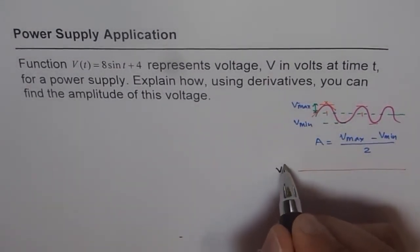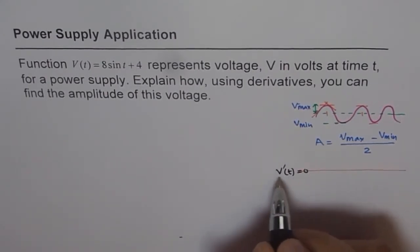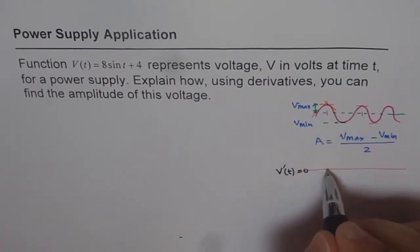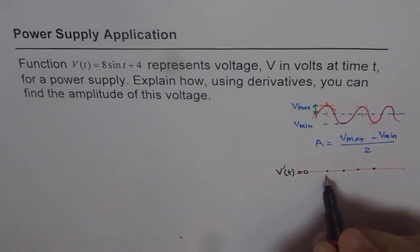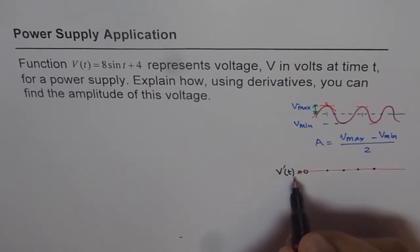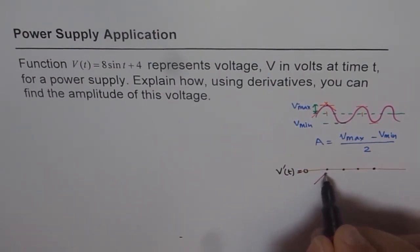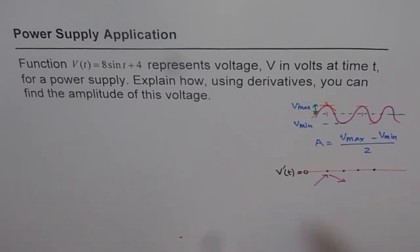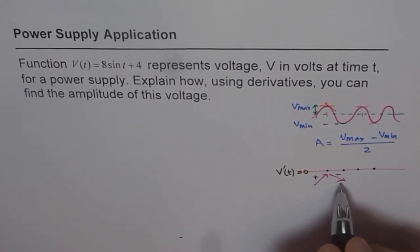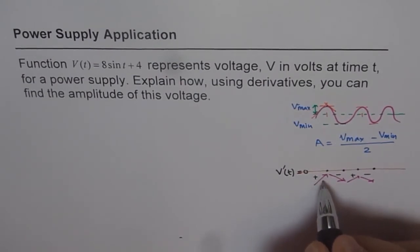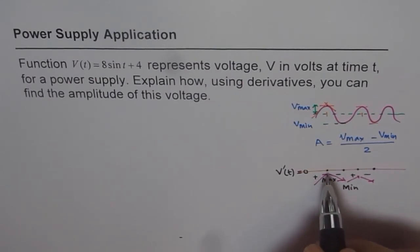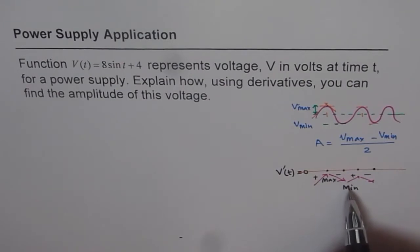The first step is to find V'(t) and equate it to zero, giving the zeros of the first derivative — the critical points. Then analyze these zeros on either side: check if the derivative is positive or negative. If positive, the function is increasing; if negative, decreasing. A pattern of increasing then decreasing gives a maximum, and decreasing then increasing gives a minimum.